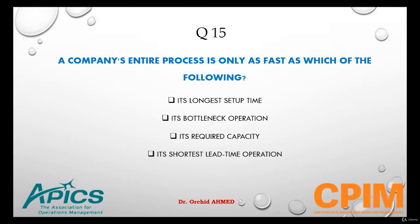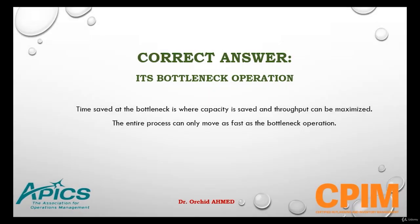Question number 15. A company's entire process is only as fast as which of the following? Its longest setup time, its bottleneck operation, its required capacity, or its shortest lead time operation. The company's entire process is only as fast as the bottleneck operation. Time saved at the bottleneck is where capacity is saved and throughput can be maximized.